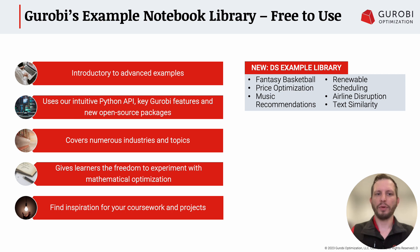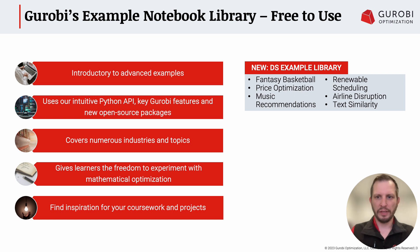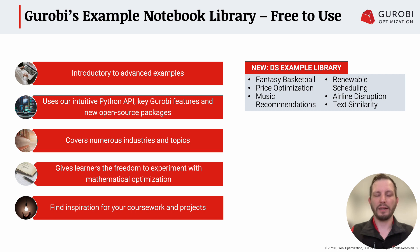Over the last couple of years, we've been really building out our data science example library — examples tailored towards the data science crowd that have some data science component. We have a fantasy basketball example, price optimization, music recommendations, renewable scheduling (which is part of this course and OPTI 101), and also some cool examples on airline disruption and text similarity. These show the power of combining machine learning, data science, and mathematical optimization.